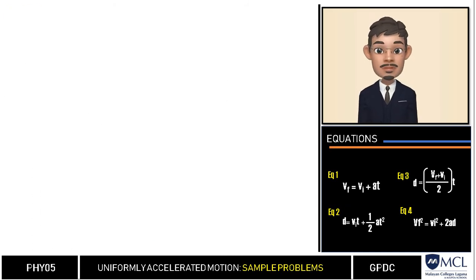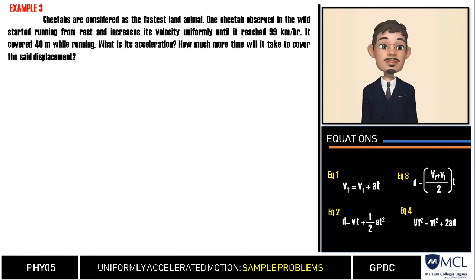I hope this is clear so far. Let us have the last example for this video. Cheetahs are considered the fastest land animal. One cheetah is observed in the wild, started running from rest, and increased its velocity uniformly until it reached 99 kilometers per hour. It covered 40 meters while running. What is its acceleration, and how much time will it take to cover the said displacement?